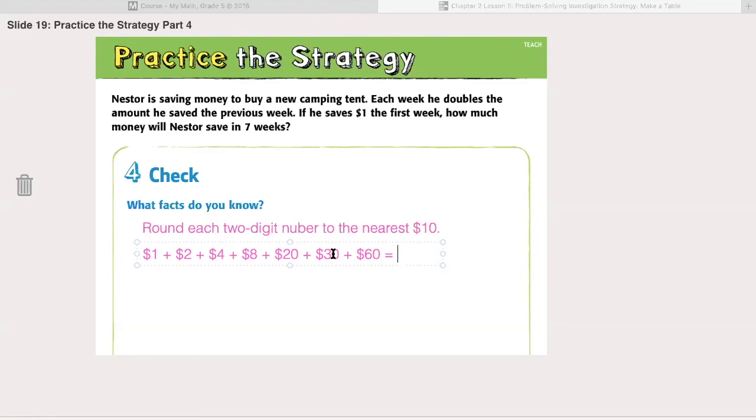So sixty plus thirty is ninety. Ninety plus twenty is one hundred and ten. One hundred and ten plus eight is one hundred and eighteen, one hundred and twenty two, one hundred and twenty four, one hundred and twenty five. One hundred and twenty five is actually quite close to one hundred and twenty seven, so yes our answer is reasonable.